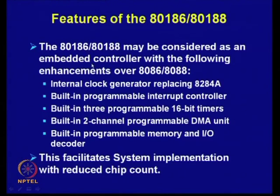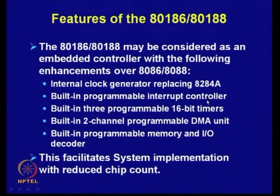The 80186 incorporated an internal clock generator — earlier the clock generator was outside the processor (the 8284A was the external clock generator IC). It also includes a built-in programmable interrupt controller (previously external to 8086), built-in three programmable 16-bit timers, and a built-in two-channel programmable DMA controller.